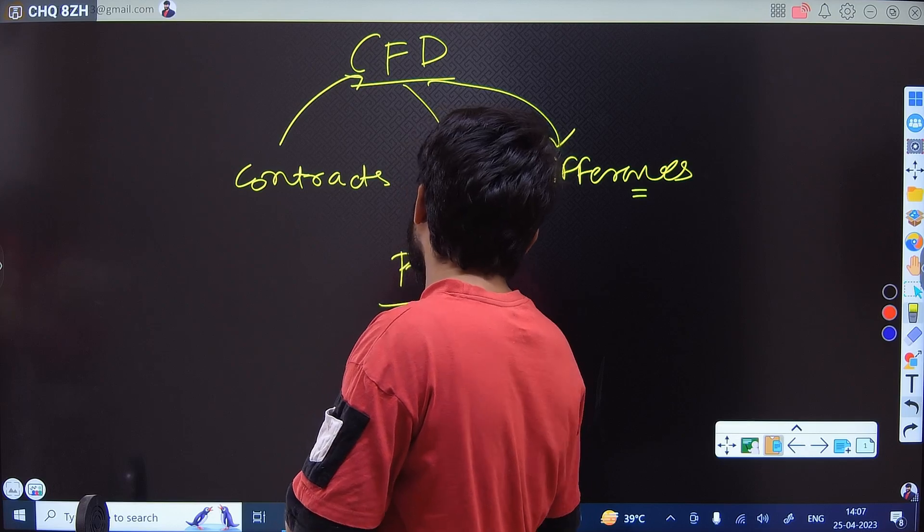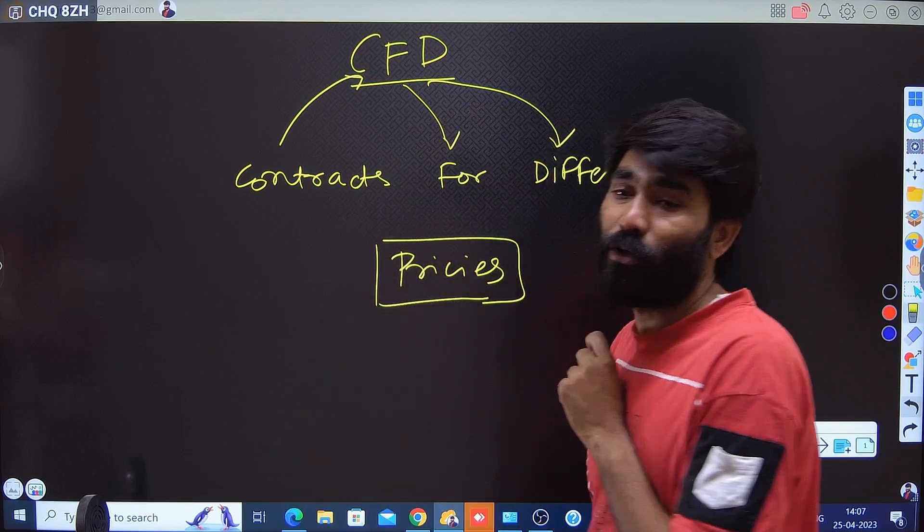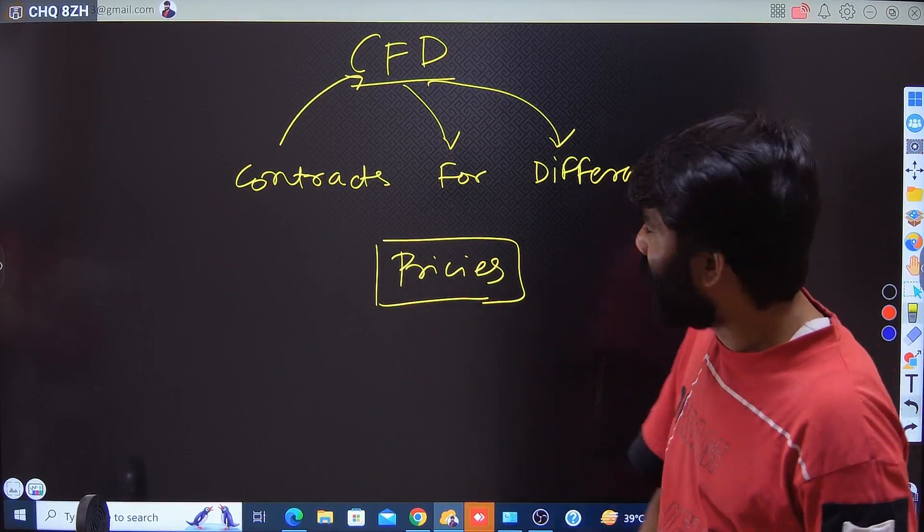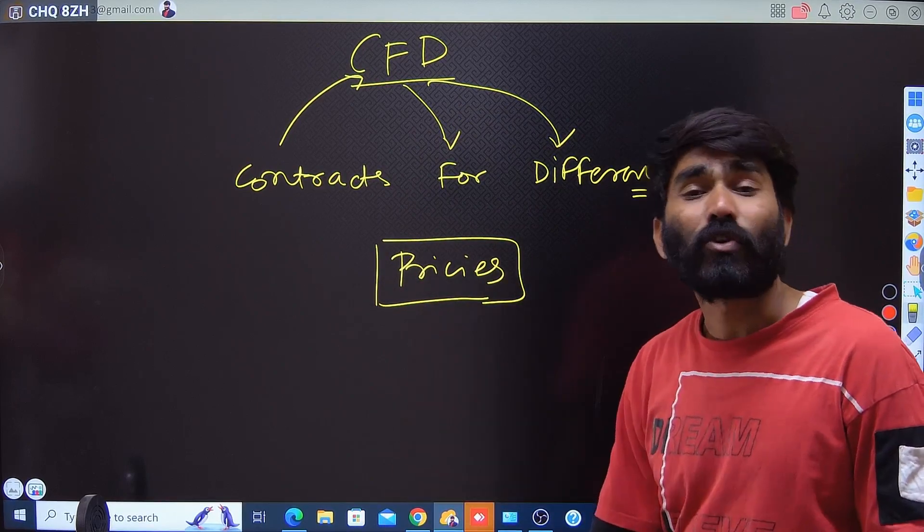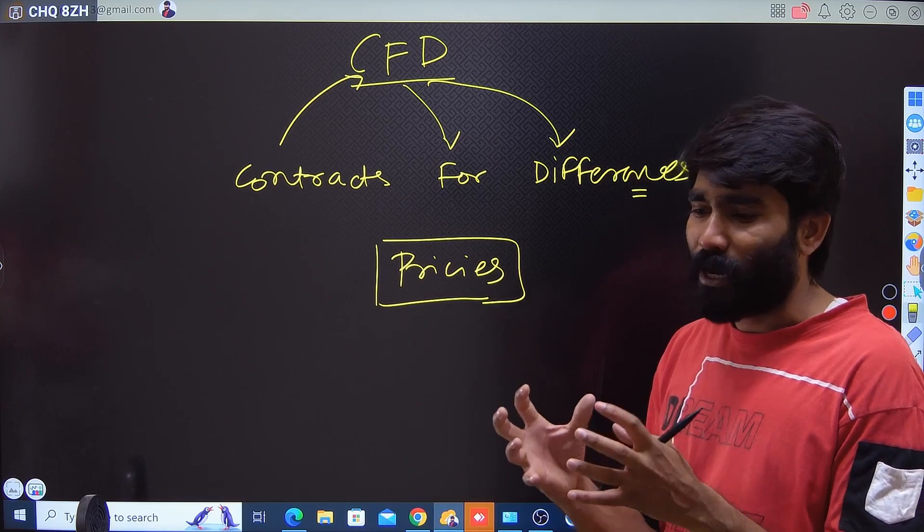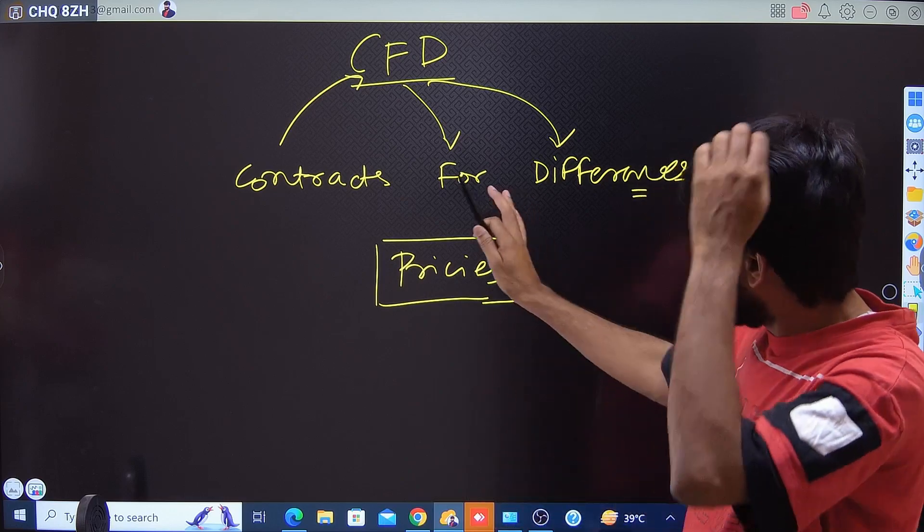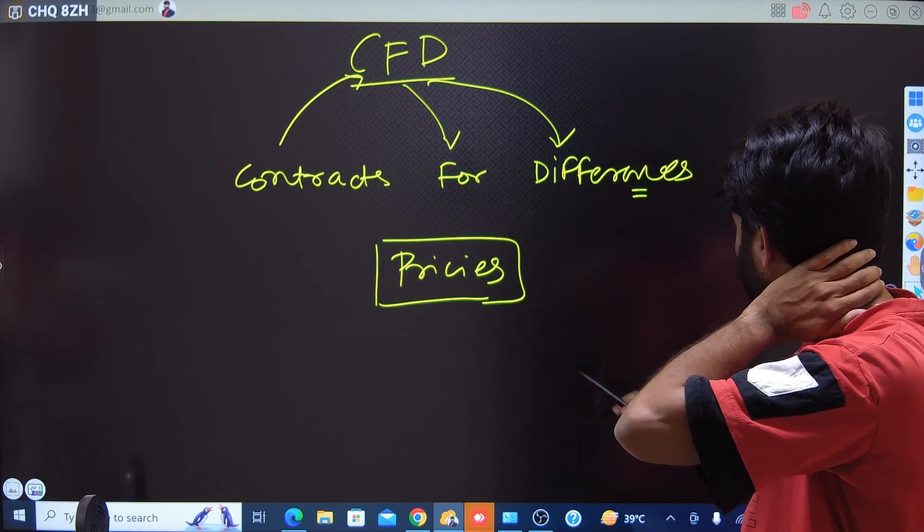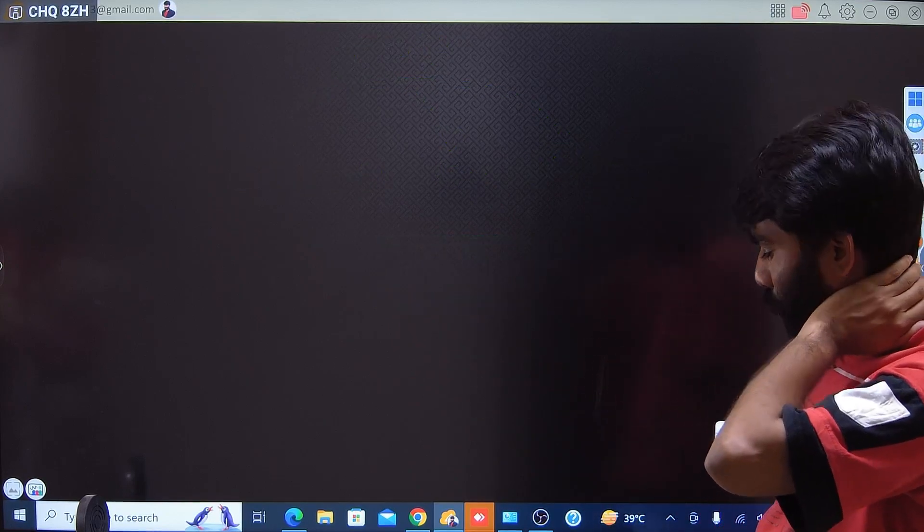Price plays a very crucial role where you don't need to hold any security in your account. Then how can I enter into such contracts and gain the price exposure? The logic or term is very simple, so here you need to put a logic how you can do it.